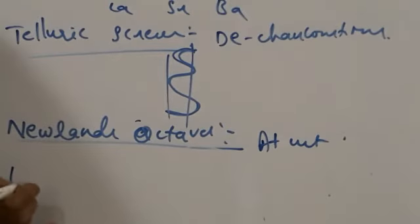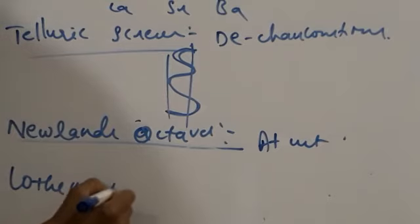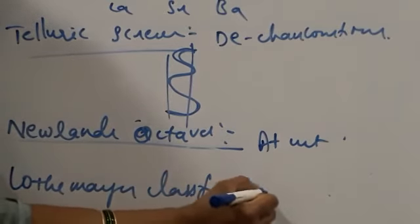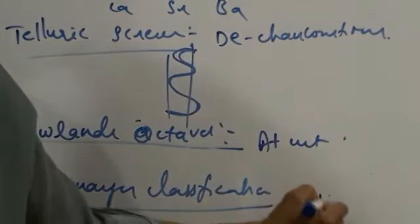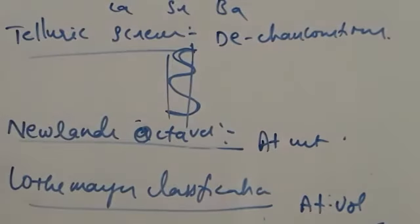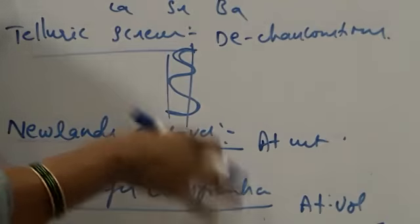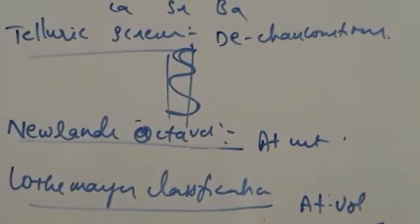Next, coming to Lothar Meyer's classification. In Lothar Meyer's classification, he considered atomic volume as the basis for classification, and arranged all the elements according to the increasing order of atomic volume. You know that density equals mass divided by volume, so volume equals mass divided by density. Basing upon that, he framed a new periodic table. Atomic volume is the basis for Lothar Meyer's classification.